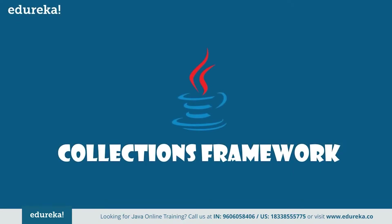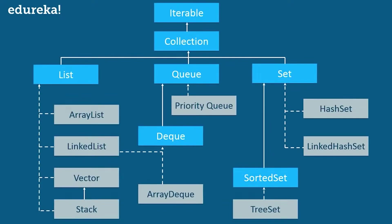A Java collections framework provides an architecture to store and manipulate a group of objects, and it includes interfaces, classes, and algorithms. In this figure, blue boxes refer to the different interfaces and the gray color rectangles define classes. So here, List is an interface and ArrayList, LinkedList, and Vector — all these classes implement List as an interface. Similarly, Deque is also an interface, so it extends and inherits the Queue interface.